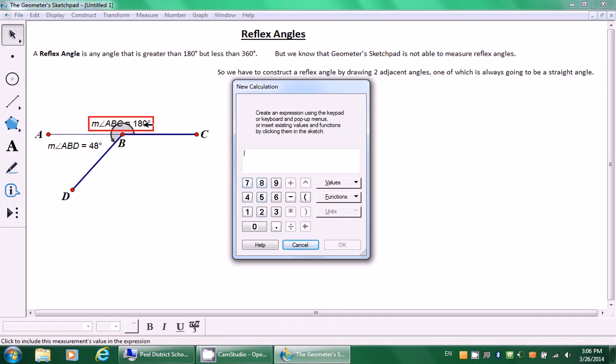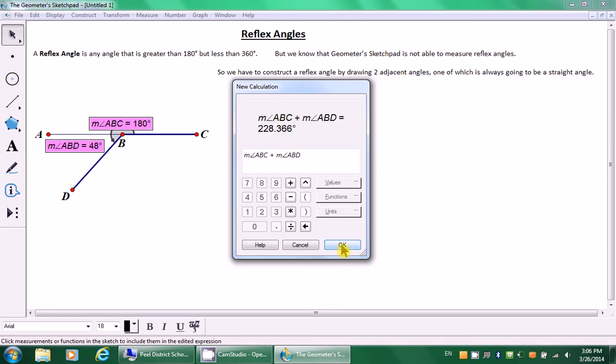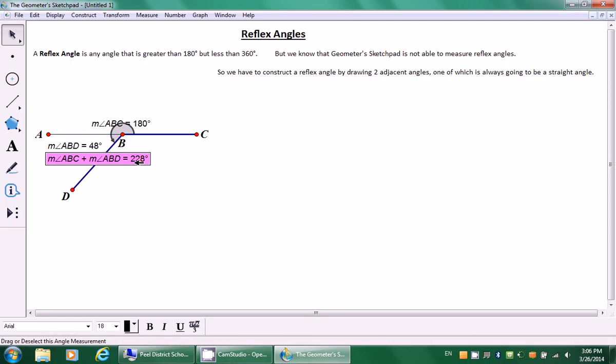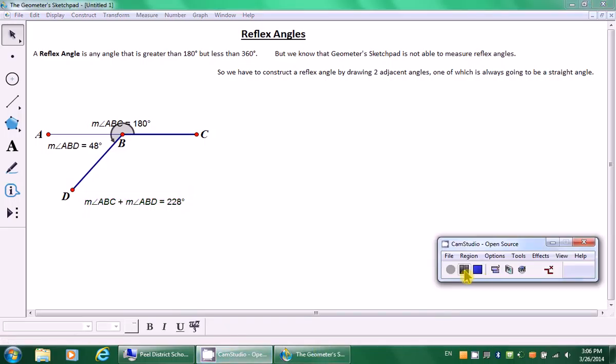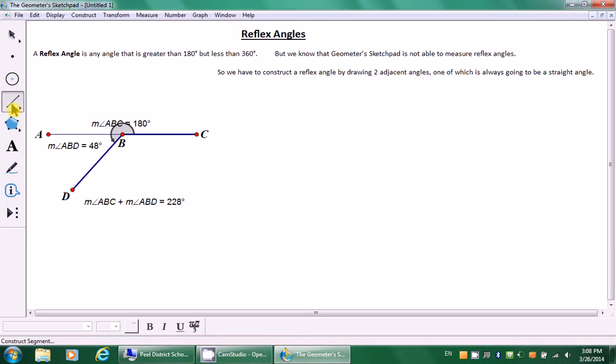Now to find the total value of the reflex angle, we have to add these two values together, these two separate angles. So we're going to go to number, bring down the Geometer Sketchpad Calculator. Remember, I never want you to use the number pad. I want you simply to click on the angle measurement plus the second angle measurement, click OK, and there we have it. We have the total value of the reflex angle.